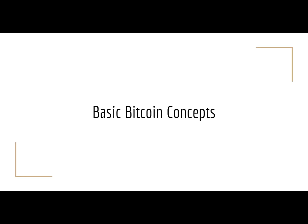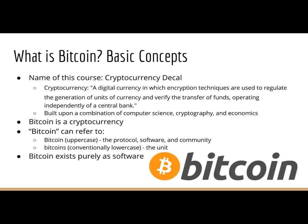Some basic Bitcoin concepts. The name of this course is the Cryptocurrency DeCal. A cryptocurrency is basically any currency that uses computer science, cryptography, and economics to verify transactions. Bitcoin is a cryptocurrency — it's also the first cryptocurrency and it's generally considered the flagship cryptocurrency because it is the most robust. Bitcoin can refer to uppercase Bitcoin meaning the specific protocol, software, and community, or lowercase bitcoins as the unit. Bitcoin exists purely as software, so to use Bitcoin I download wallet software which will generate addresses for me, and if I want to receive Bitcoin I give these addresses to other people.